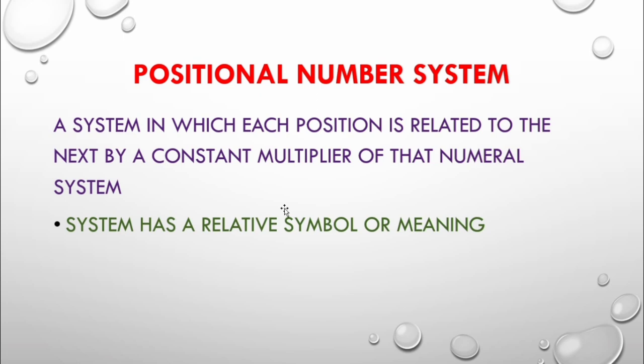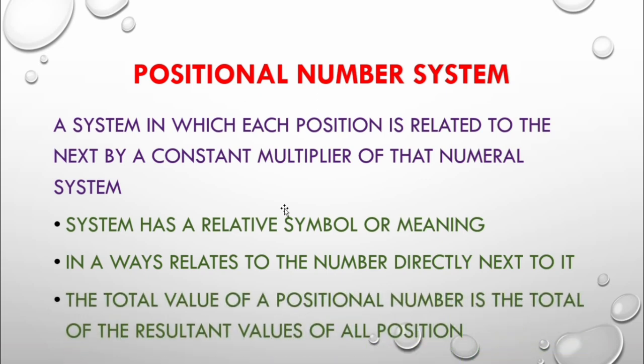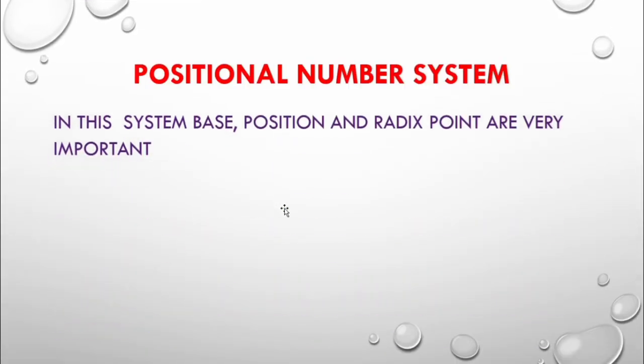That means this system has a relative symbol or meaning it contains all the time. In a way, it relates to the number directly next to it. The total value of a positional number is the total value of the resultant values of all positions. In this system base position and radix points are very important.